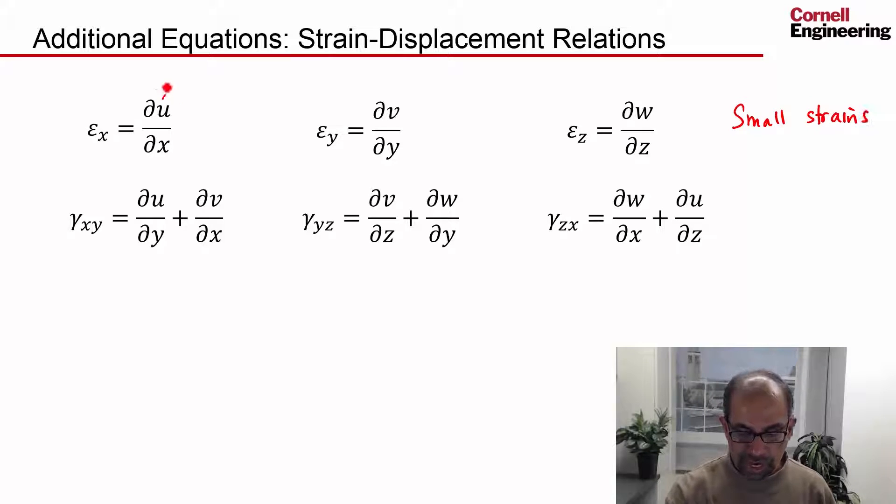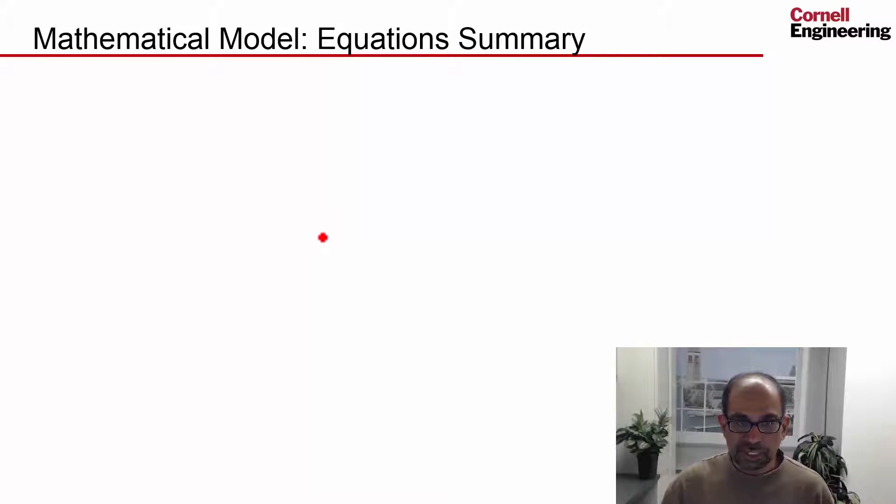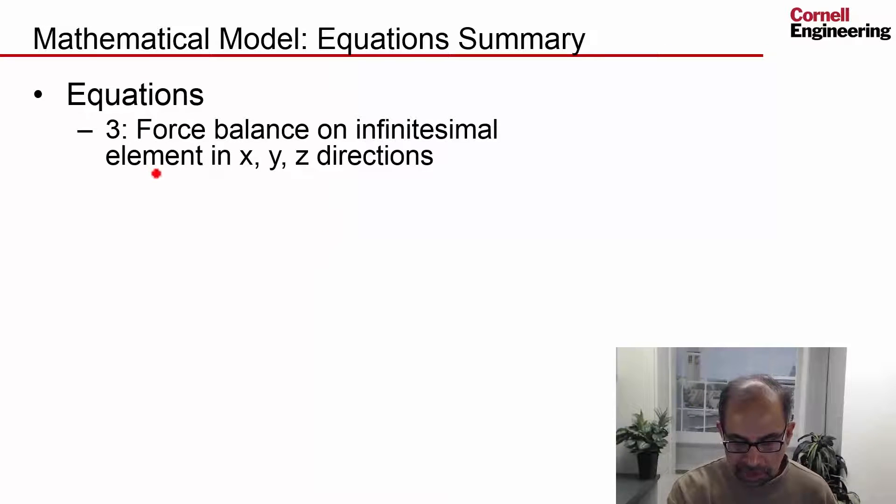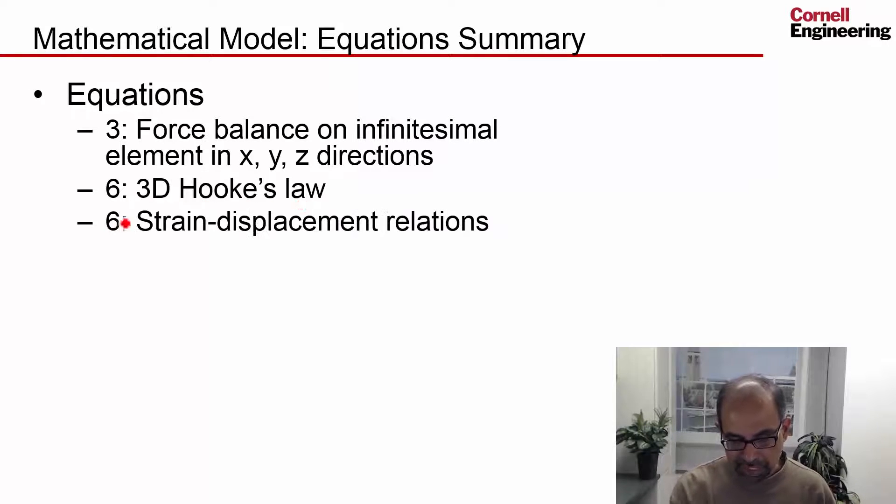So we have added three unknowns, the three displacement fields, but we have six equations. And let's take stock of the equations and the unknowns. The equations, we have three from force balance on infinitesimal element in X, Y, and Z directions. So these are the governing equations, the equilibrium equations. We have six from 3D Hooke's Law and six from strain displacement relations. So we have a total of 15 equations.